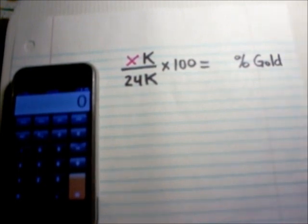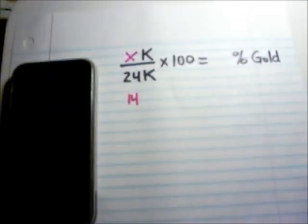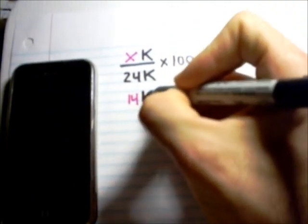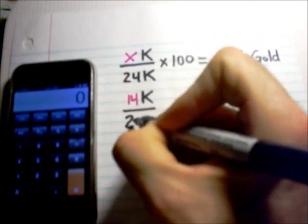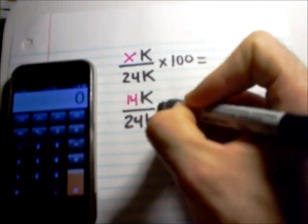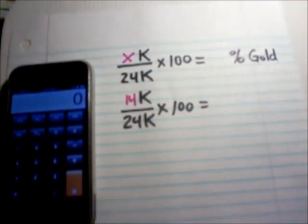So, here's an example of how that works. So, let's say we have 14 carats out of 24 carats possible. And whatever that number is, we're going to multiply that times 100 and we'll get our percentage.